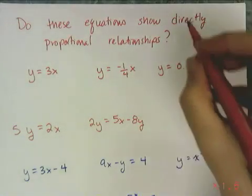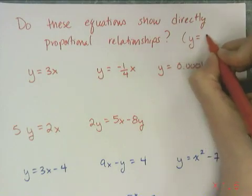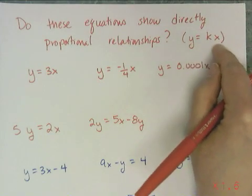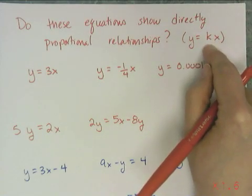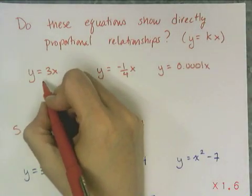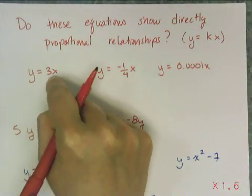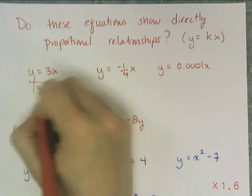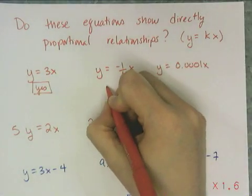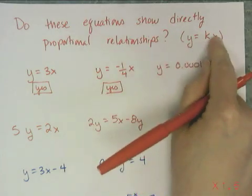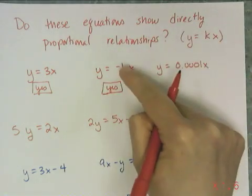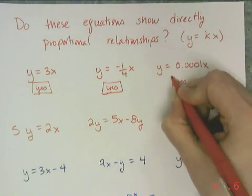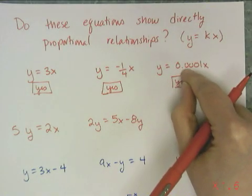Direct variations always have equations of the form y equals some constant times x — no addition or subtraction, just some constant times x. So y equals 3x is in that form — yes, it's a direct variation with constant of variation 3. Another example is also a direct variation with constant negative 1/4. And another example is yes, a direct variation — the constant just happens to be 1/10,000.